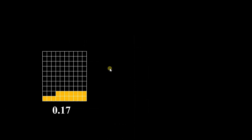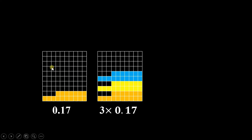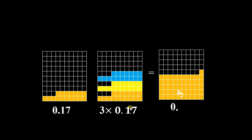Ginawa ko rin ng figure kung paano minultiply. Okay, tatlo — 0.17: kung makikita nyo, 17 lang itong may shade out of 1 whole na 100 boxes. Ibig sabihin tatlong 17 — lalagay natin itong tatlong ito dito. Kaya 0.51 — tama yung sagot natin sa ginamit natin sa figure.